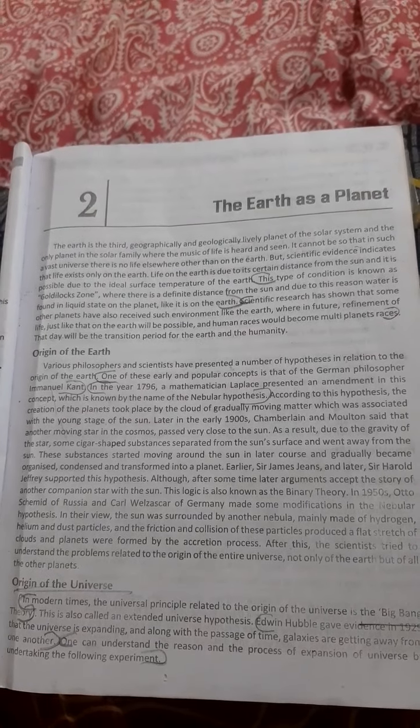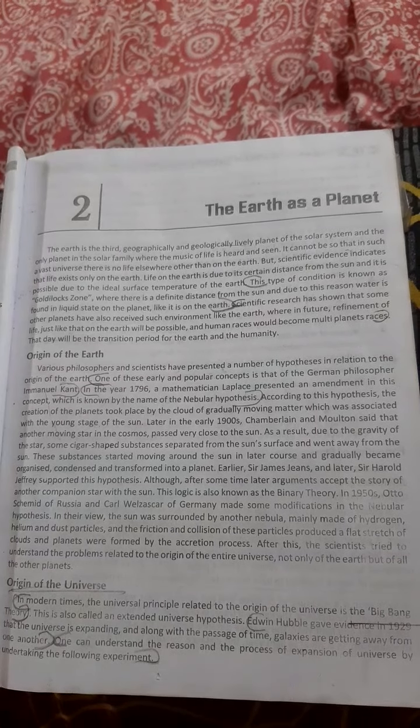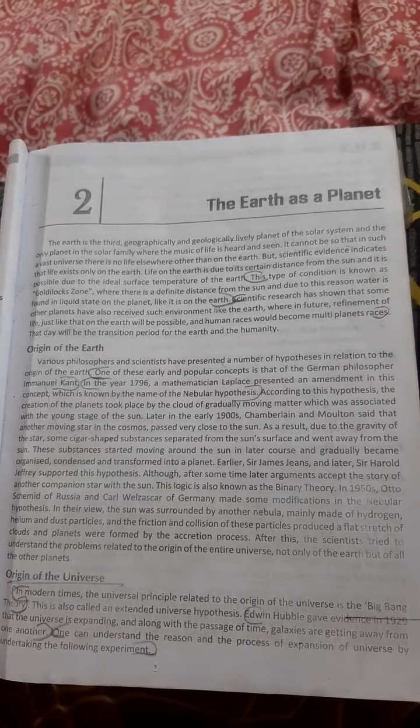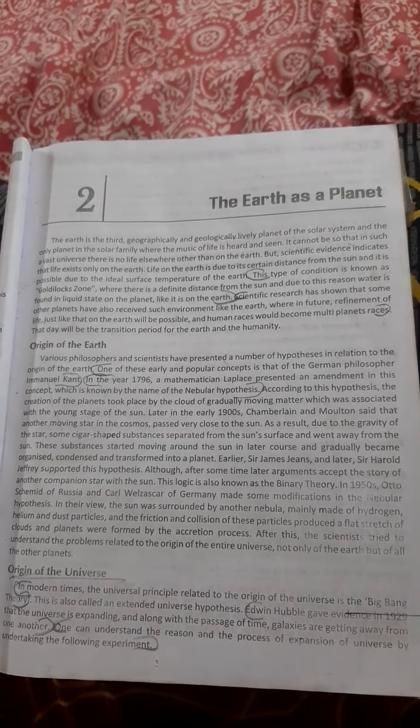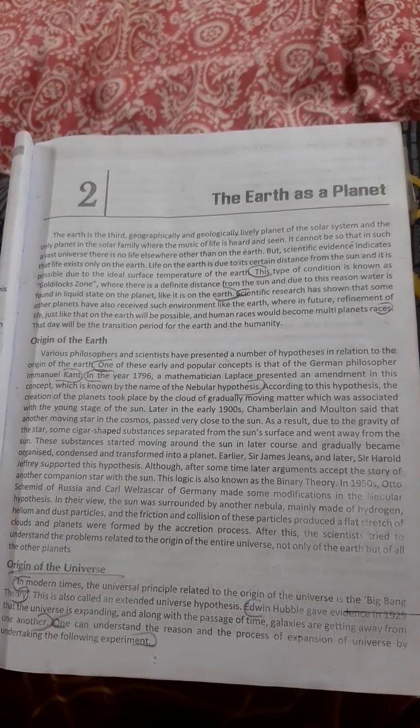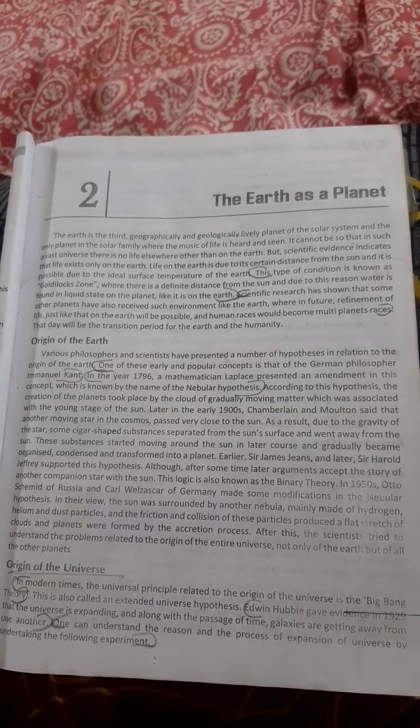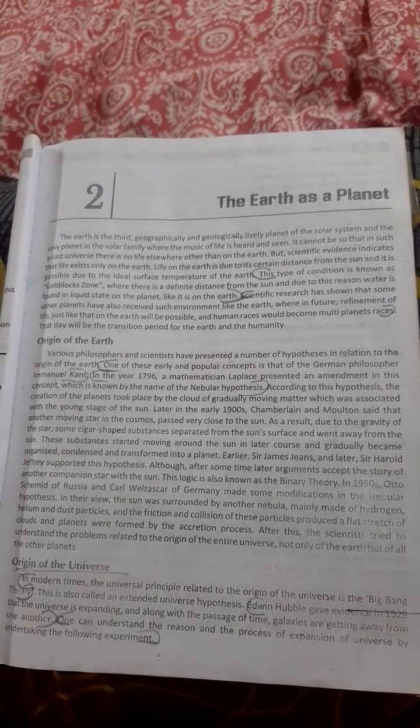Later in the early 19th century, Chamberlain and Moulton said that another moving star in the cosmos passed very close to the Sun. As a result, due to the gravity of the other moving star,